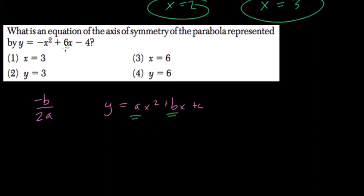So in our case, b equals 6, right? b equals 6, and a equals, well, negative x squared, so a equals negative 1.